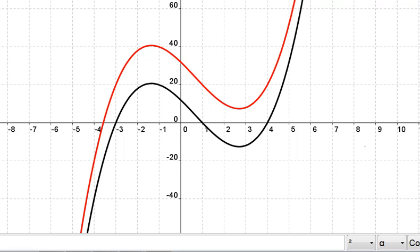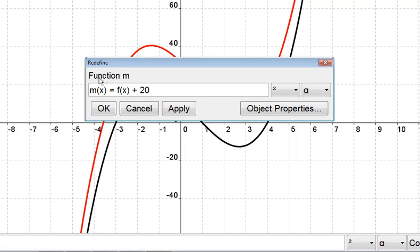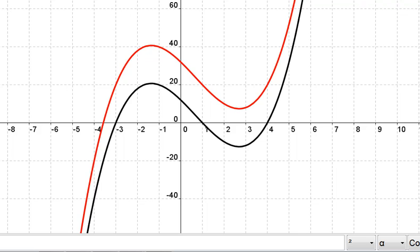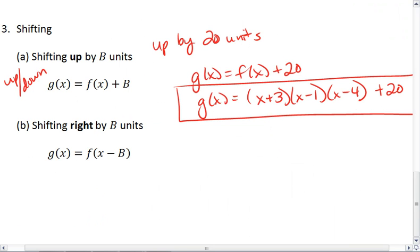Okay, what if we wanted to shift down? And you can see here it's defined as f of x plus 20. Well, let's say we wanted to shift down. It's a similar process, but instead we would subtract. So let's shift down by 15 units.